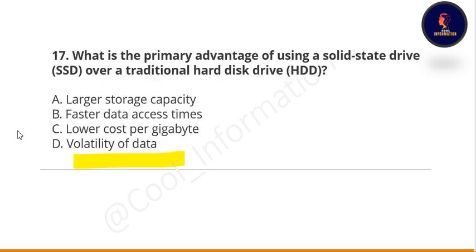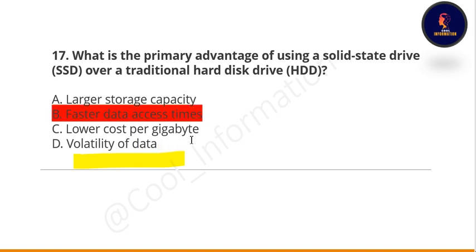Next question: what is the primary advantage of using a Solid State Drive (SSD) over a traditional hard disk drive? Options are large storage capacity, faster data access time, lower cost per gigabyte, or volatility of data. The correct option is B — faster data access time.